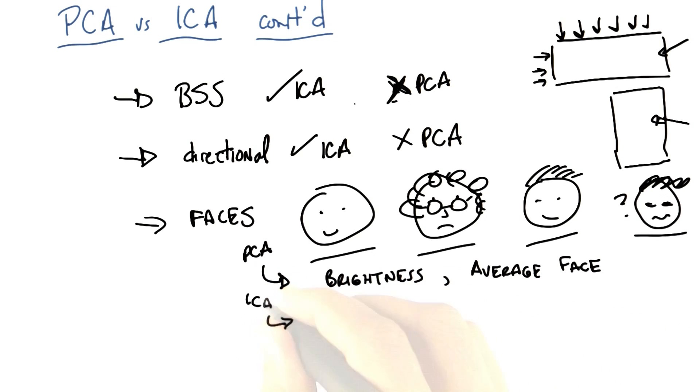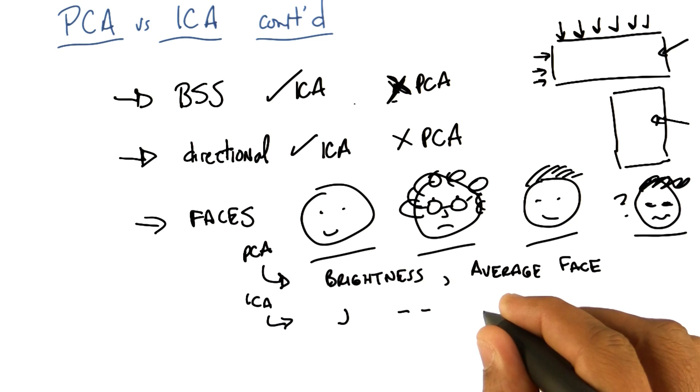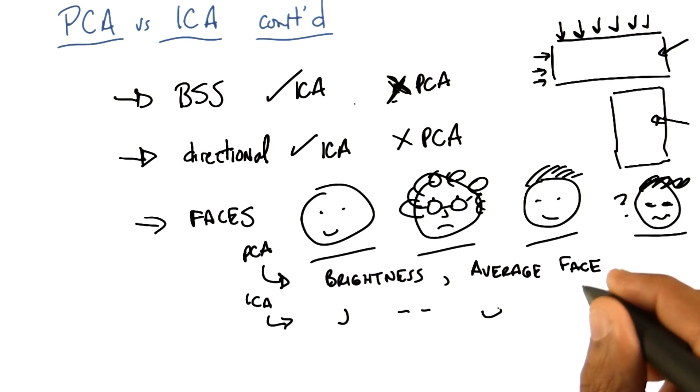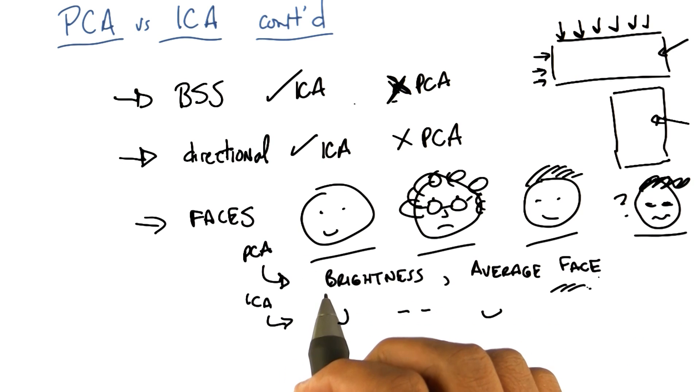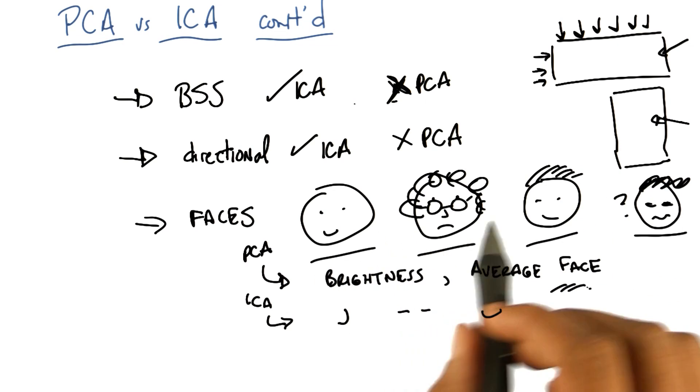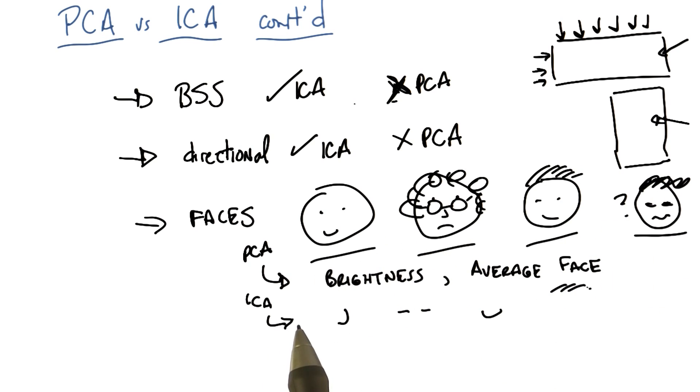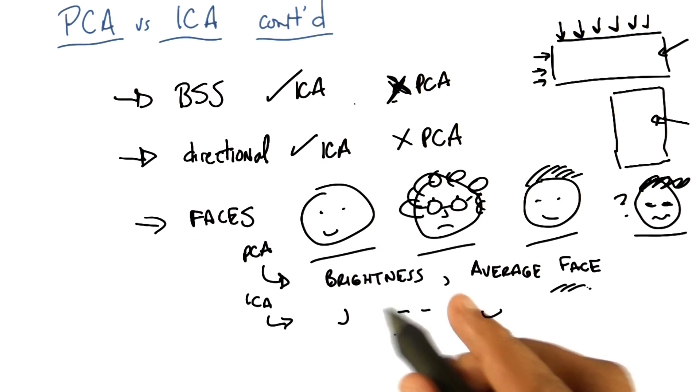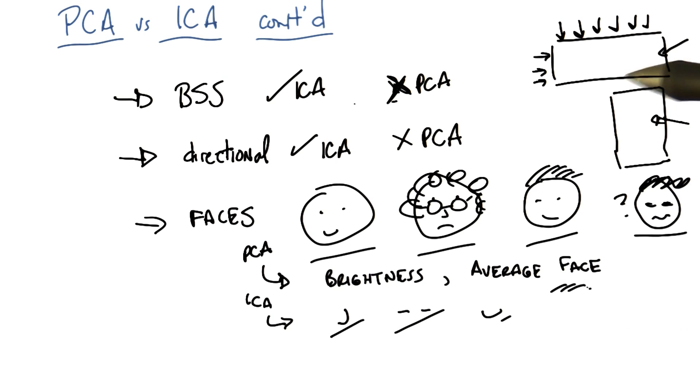Do you know what ICA ends up finding? Noses? Yes. It finds noses. It finds eye selectors. It finds mouth selectors. It finds hair selectors. And I think intuitively the way I would think about this is because PCA is doing this global orthogonality thing, it's going to be forced to find global features. ICA, I didn't say was global, and that's because it's basically local. It doesn't care about orthogonality. So it tends to find parts of.